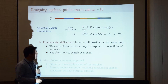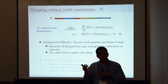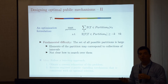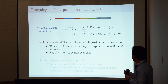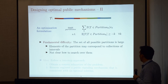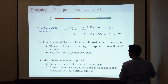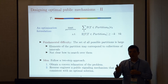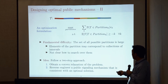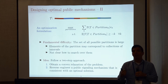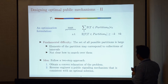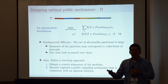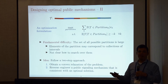Here is the fundamental difficulty: I am trying to optimize over all partitions, which is a pretty messy set and it's not clear how to search over them to find the optimal mechanism. I address this difficulty with a two-step approach: first, I work with a convex relaxation of this problem; second, given the solution to the convex relaxation, I reverse-engineer a partition and then an optimal public signaling mechanism.